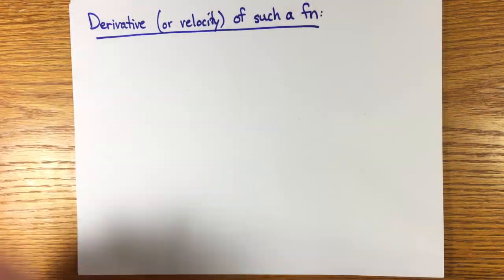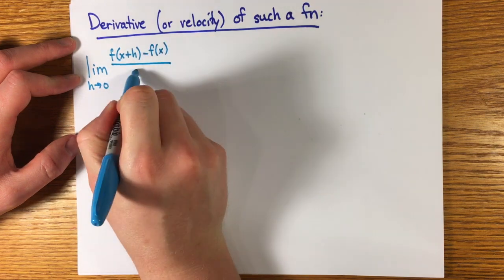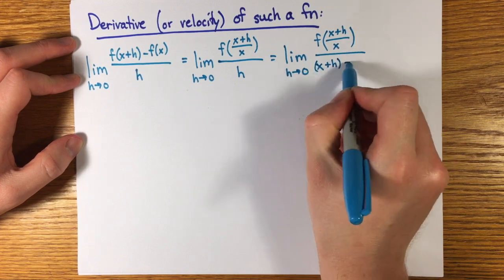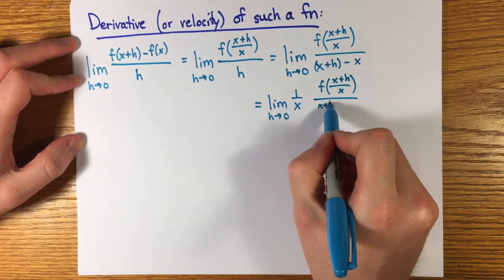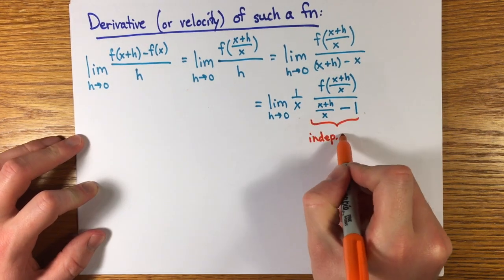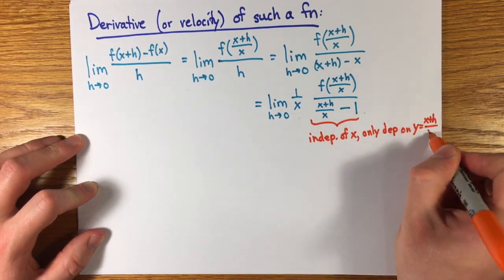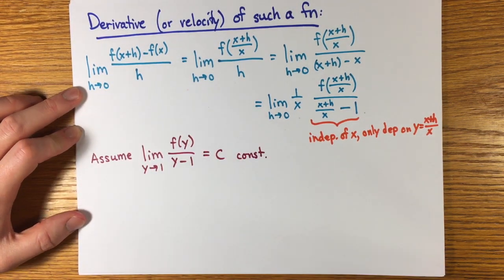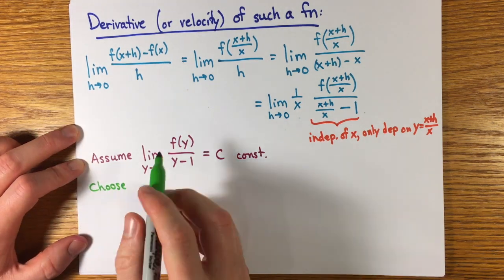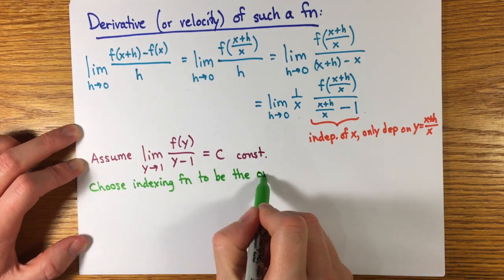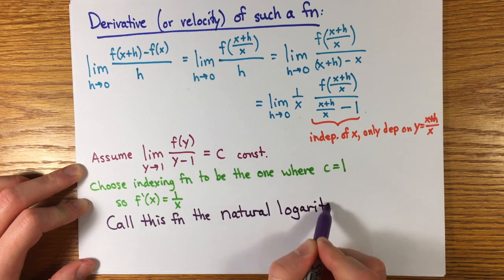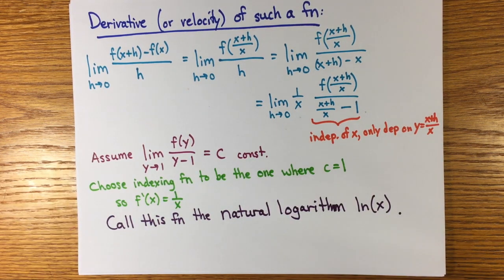If you compute the derivative of such a function, which is a notion Napier knew decades ahead of his time, not by that name, but which he understood as a velocity, using modern notation, the difference quotient limit is the limit of 1 over x times f of x plus h over x divided by x plus h over x minus 1. That's 1 over x times an expression that doesn't actually depend on x, just the ratio y equals x plus h over x. So as y goes to 1, the limit, if it exists, is just some constant c independent of x. By declaring his interest in the particular function for which the constant c was equal to 1, Napier introduced the natural logarithm.